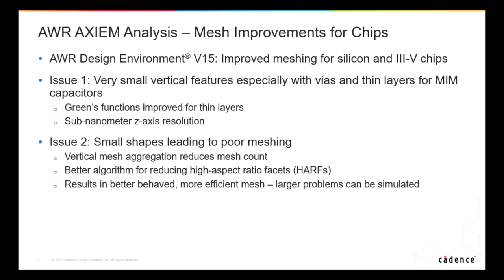V15 was released about a month ago, and we've made a number of improvements to Axiom for silicon chips and all chip types — including 3-5 chips, gallium nitride, and gallium arsenide. First, we now support very small vertical features much better in two ways. The Green's functions, which are the underlying math behind Axiom, support very thin layers better. We now support sub-nanometer resolution — before we rounded to a nanometer. This comes into play in vias in silicon and in thin layers for MIM (metal-insulator-metal) capacitors, which we can now model and simulate much better.